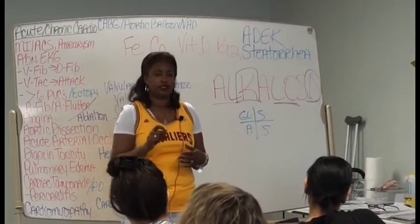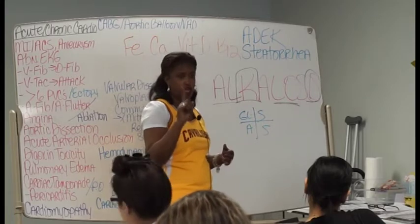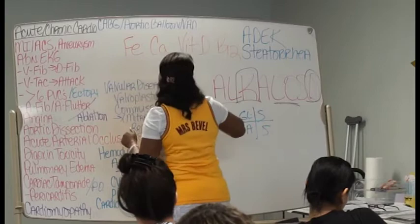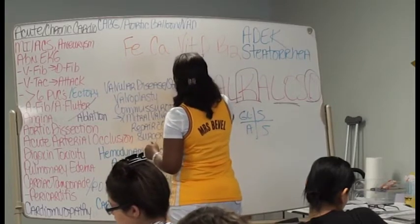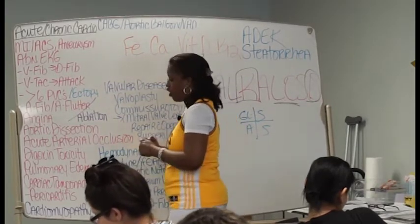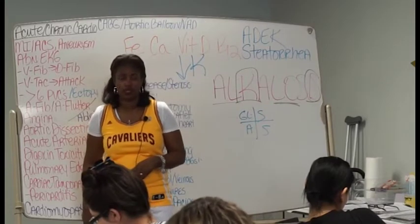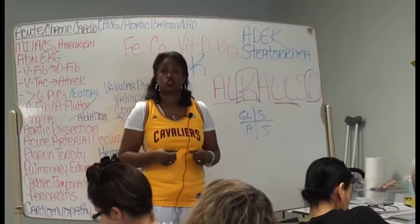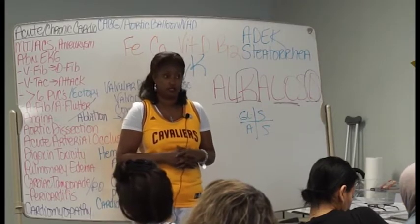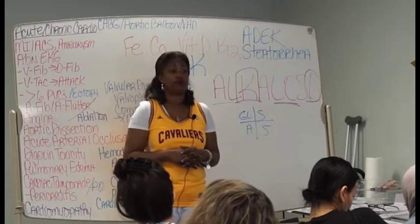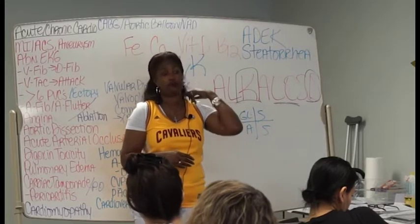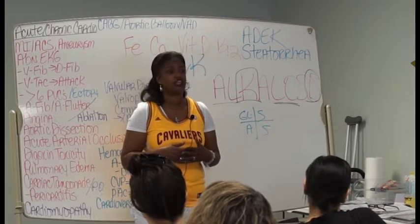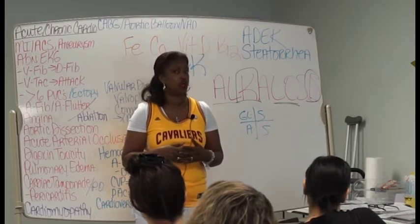For paralytic ileus, the number one lab to monitor is going to be potassium. When potassium is low — as in all post-op patients — your patient is at risk for bowel obstruction. So your job as nurses is to walk into the room of your post-op patient. I've already told you many times that it's important to do rounds. Nothing is more important than rounding on the patient.